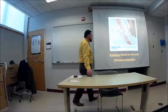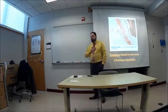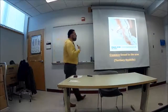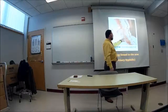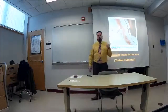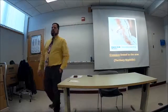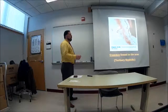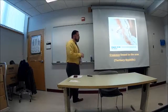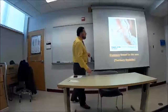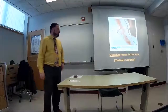Tertiary syphilis — these are gummas. I don't have a great picture of what they look like inside the brain or heart, but here you can see the scarring occurring in an extremity — in this case, the arm. If you could visualize that happening in the heart and other organs, that's what it would look like. These gummas and scarring are what characterize tertiary syphilis.